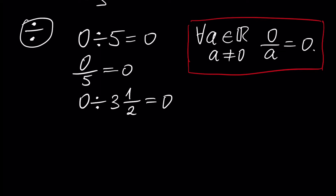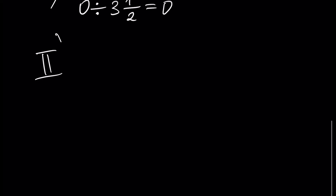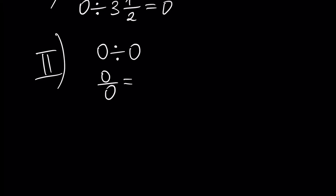The second case is division of zero by zero. We write it as zero divided by zero. Division of zero by zero is not determined — we cannot determine this.